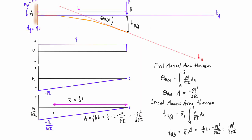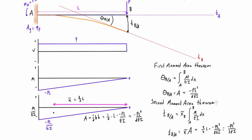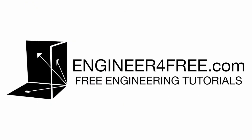Thanks for watching. Remember: when using the moment area method and taking an interval A to B, make sure one side of the interval is the point you want information about, and the other side is a point where you already have information — whether slope or deflection. Join me in the next few videos where we'll go over more examples and you'll be able to see the patterns.